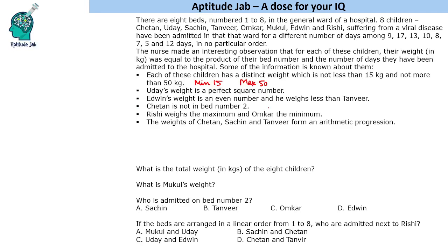Then we are given some more information. But let us first try to make the combination of these number of days versus bed number. So bed numbers are 1, 2, 3, 4, 5, 6, 7, 8.